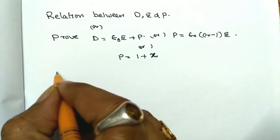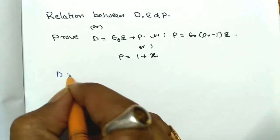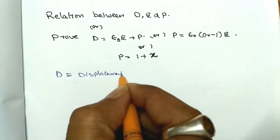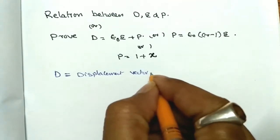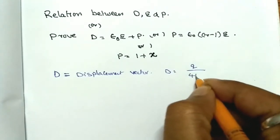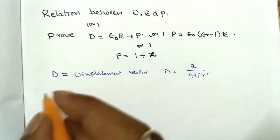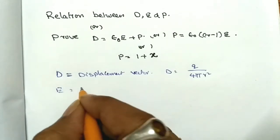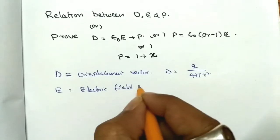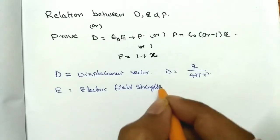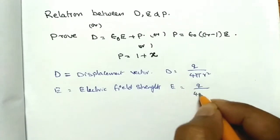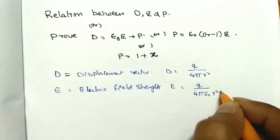First of all, we need to know what D is. D is the displacement vector. The form of D is Q by 4 pi r squared. E is the electric field strength, which is equal to Q by 4 pi epsilon naught into r squared.